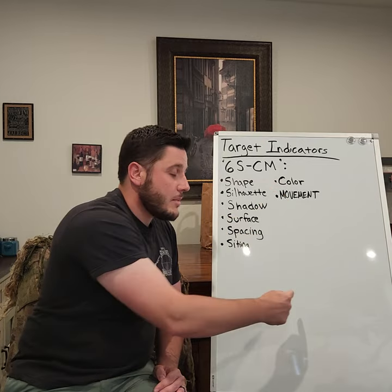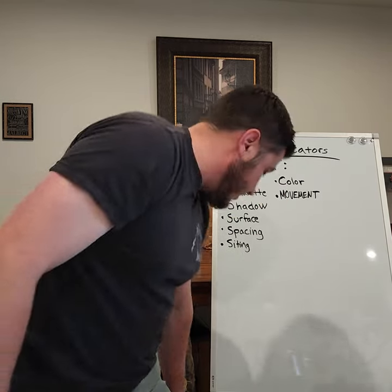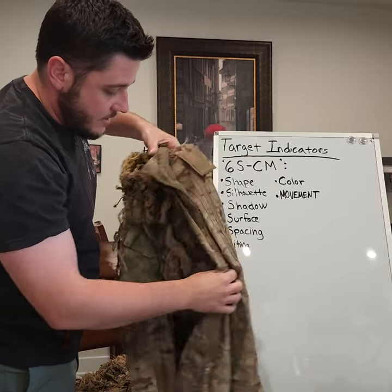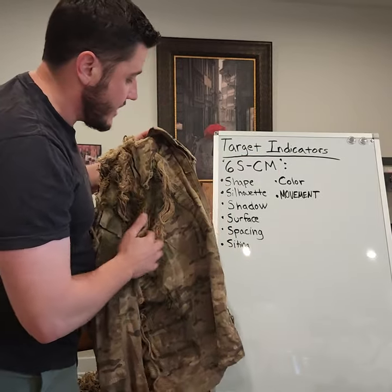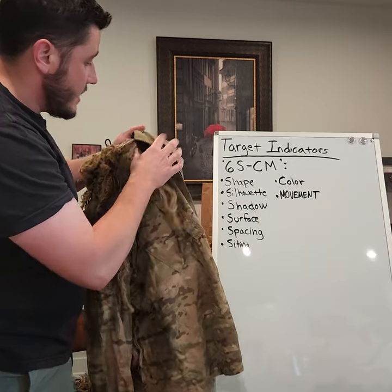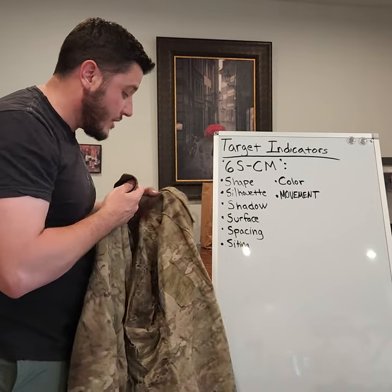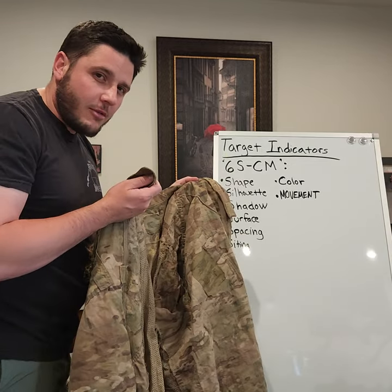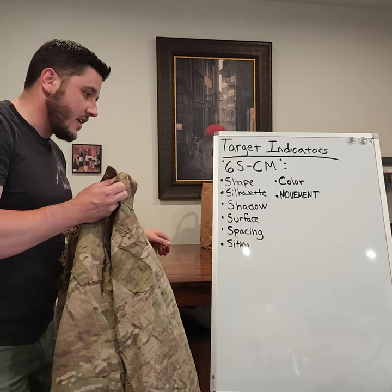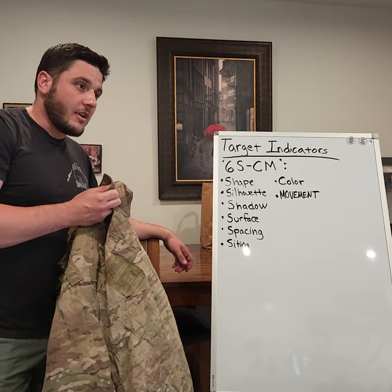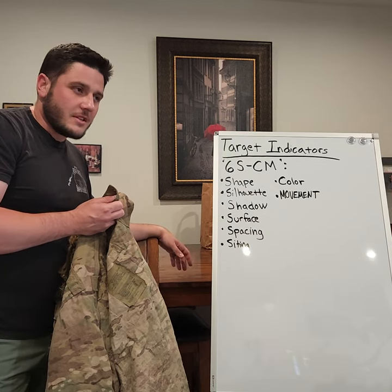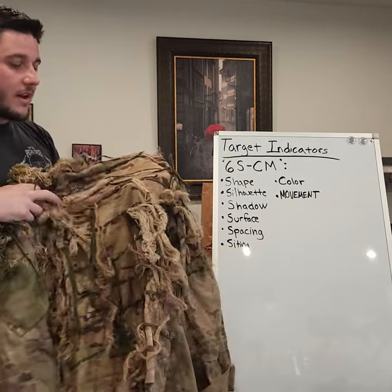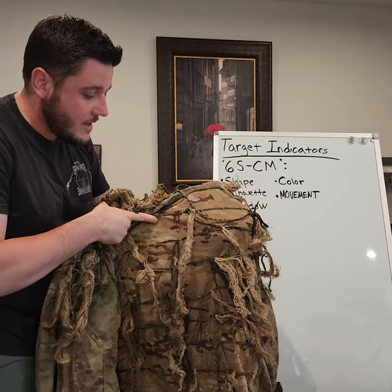Let's go into some ghillie suit stuff. This is just a multicam top I had made — standard multicam pattern, a large size, though I normally wore a medium. I bought large so it's a little bit bigger and baggier — you can get your chest rig or body armor under it if needed. On the back I had multicam mesh sewn in, with lines of 550 cord to tie on vegetation.